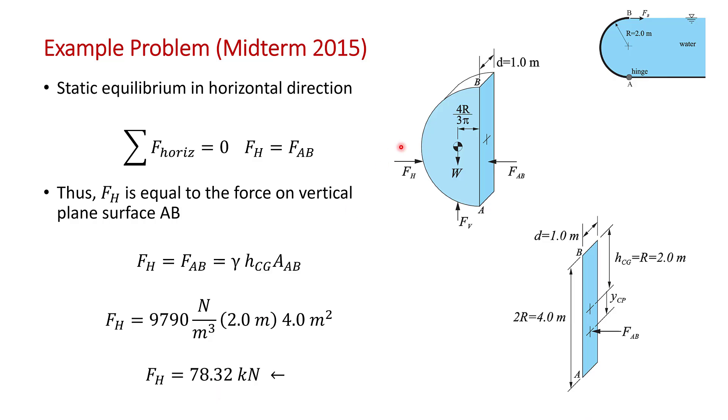Students often get the arrows wrong. We already showed in the first part of this problem where we drew the pressure distribution that we expect the force to be to the left. So make sure you get that straight because your free body diagram shows FH in the other direction for reasons that we've discussed.